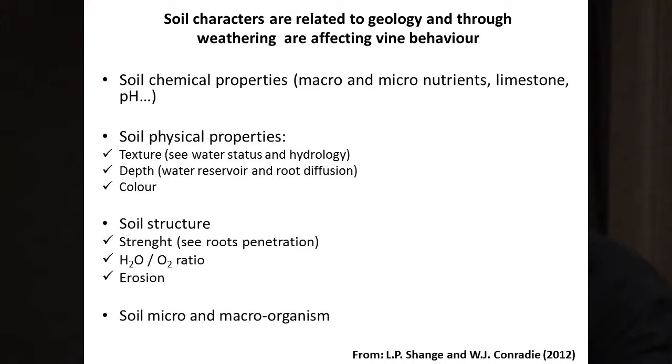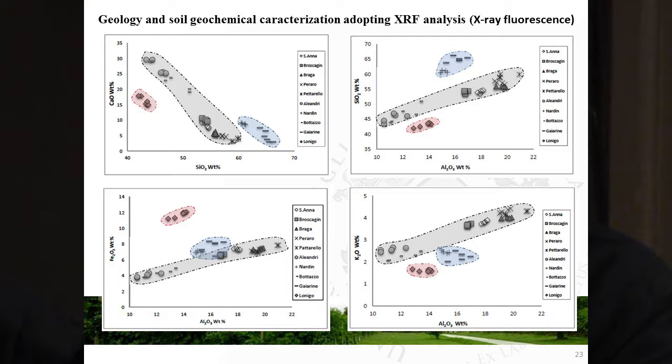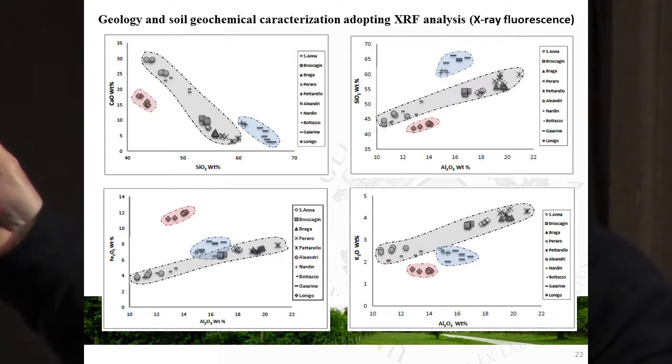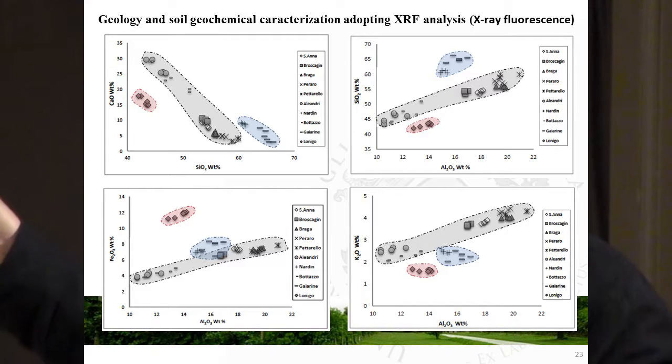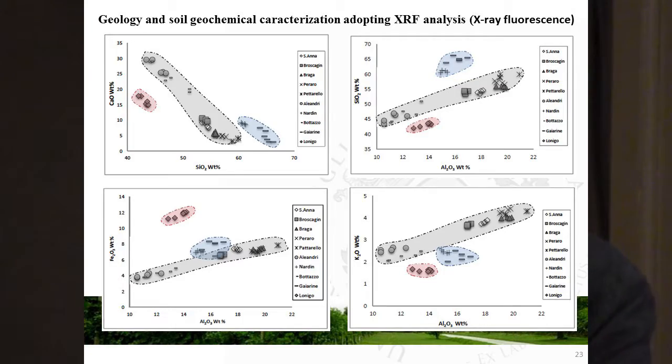Just to emphasize: soil characters are related to geology and through weathering, which is another important factor. What affects wine behavior includes soil chemical properties — macro and micronutrients, limestone, pH — soil physical properties, soil structure, and soil micro and macro organisms. But geology also gives us another important opportunity: a sort of fingerprint, a traceability of the soil. Through soil geochemical characterization adopting XRF analysis, we can quantify the quantities of aluminum, silicon, iron, or calcium, and it is possible to differentiate year after year the different regions of soil — to have a fingerprint based on geological characteristics.